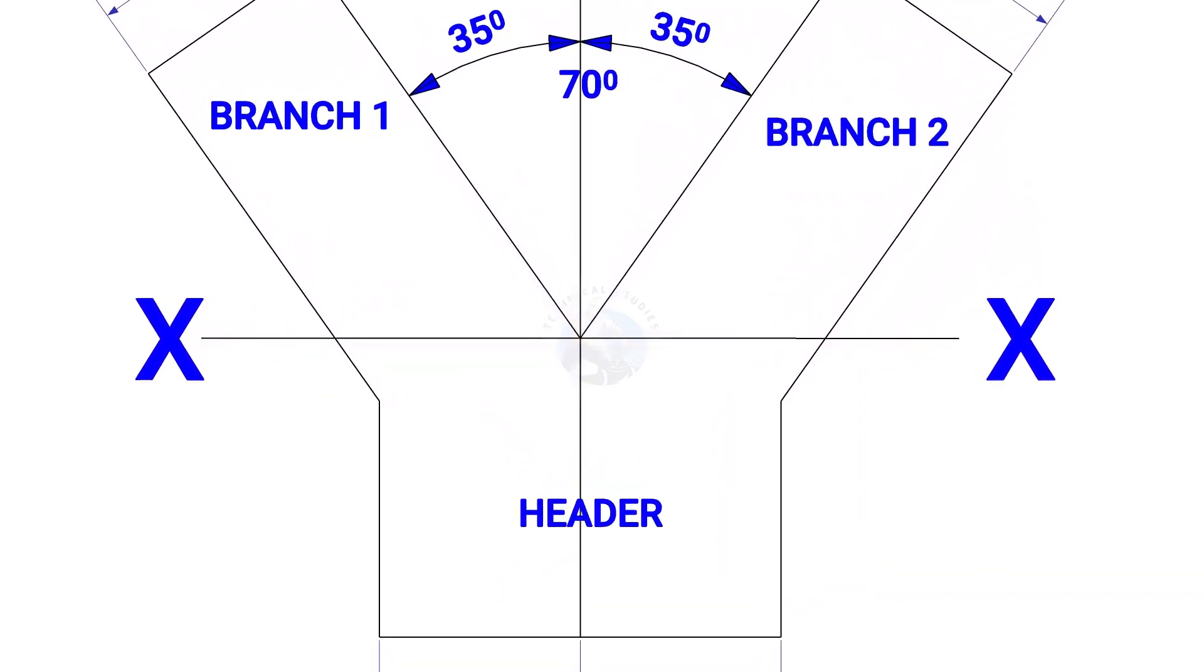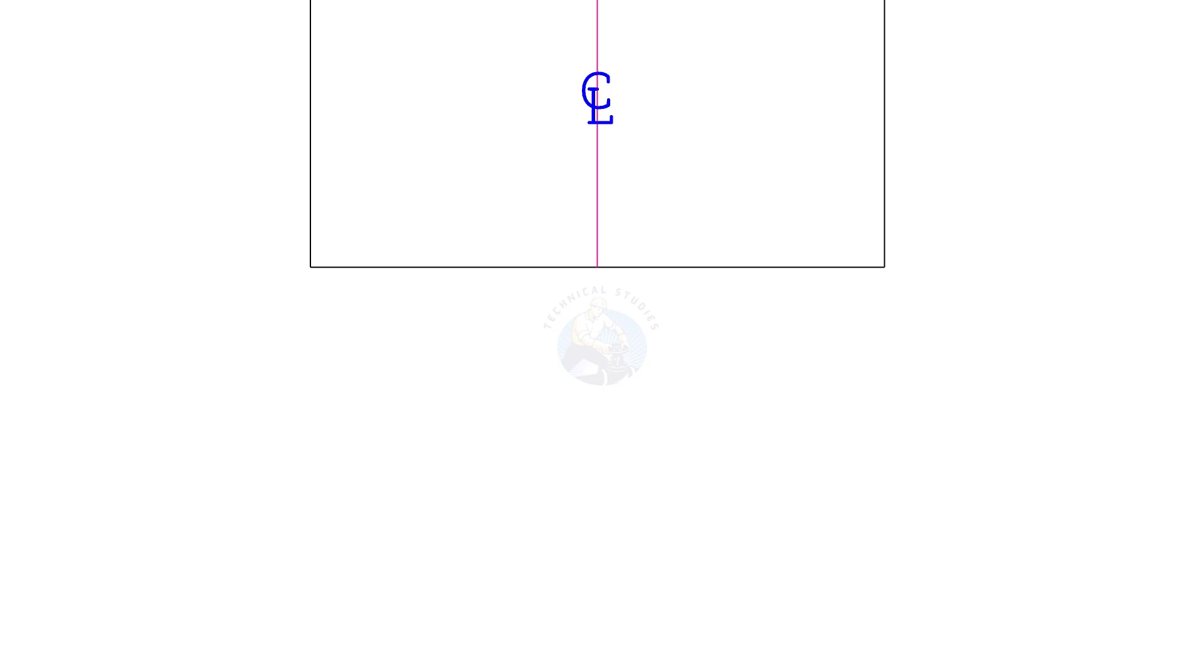Draw a half circle below the header. The radius shall be half the diameter of the header. Divide the half circle into 6 equal parts.